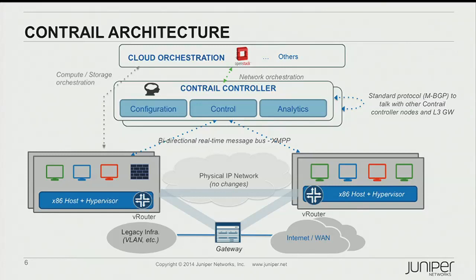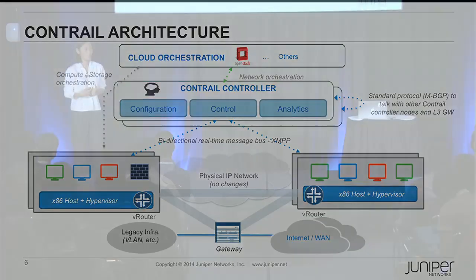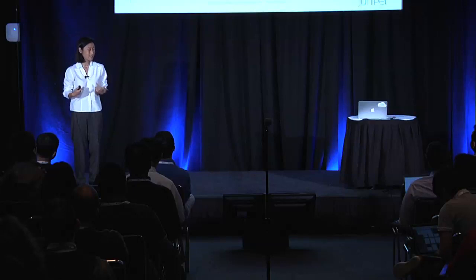The VRouter is a distributed component. It works in a hierarchical way with the broader controller, which then exposes lower-level information northbound through REST APIs into an orchestration system like OpenStack. We also support CloudStack and other higher-level systems. State synchronization happens through a real-time message bus, which is also standards-based, based on XMPP.